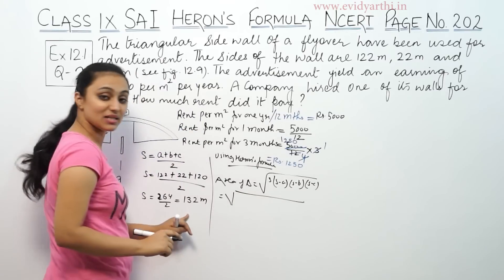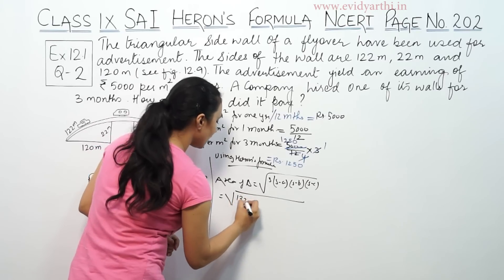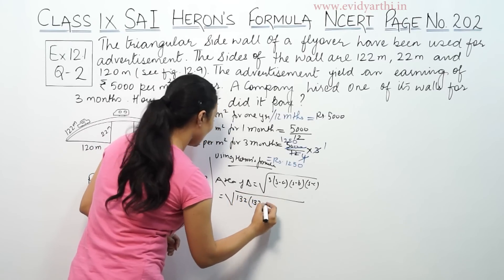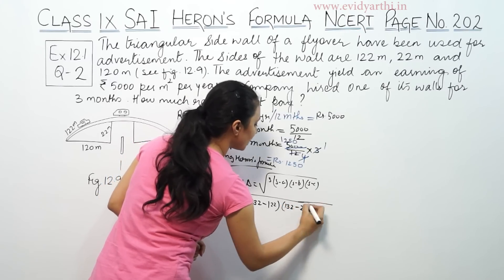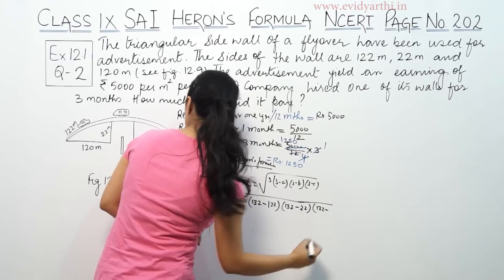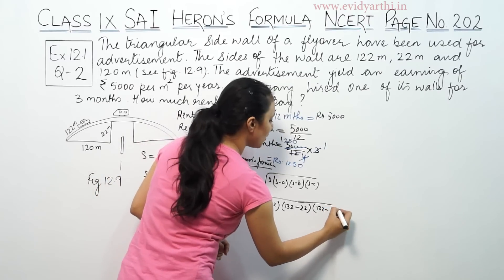So we have S, the semi-perimeter is 132. Then 132 minus A, A means first side which is 122. 132 minus B means the second side which is 22. And 132 minus C means the third side which is 120.